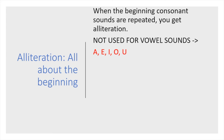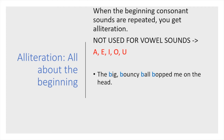Let's look at some examples. "The big bouncy ball bopped me on the head." If you notice, the B sound is repeated in this sentence — big, bouncy, ball, bopped. This is alliteration.